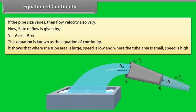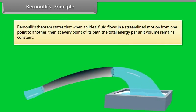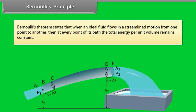The equation of continuity shows that where the tube area is large, speed is low, and where the tube area is small, speed is high. Bernoulli's theorem states that when an ideal fluid flows in streamlined motion from one point to another, at every point of its path the total energy per unit volume remains constant.